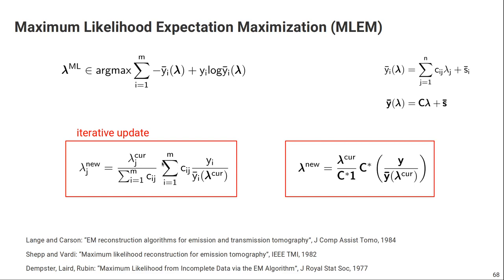Instead of writing the update formula with all the sums — which are necessary to write out the matrix-vector products for the forward model and the backward steps — we can use vector and operator notation. I define the system matrix as an operator C, and say that my vector of expected measurements is the operator C applied to the vector lambda plus the vector of contaminations. Using that notation, I can rewrite the MLEM updates in operator notation: we have a pointwise division of two vectors, then apply the adjoint of the system matrix to a vector of ones, and finally update our image.